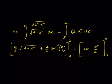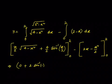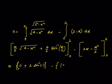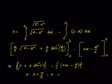Substituting x = 2: (2/2)·√(4−4) + 2·sin⁻¹(1) = 0 + 2·(π/2) = π. When x = 0, everything gives 0. For the second part at x = 2: 2(2) − (4/2) = 4 − 2 = 2; at x = 0 it's 0. So the result is π − 2.